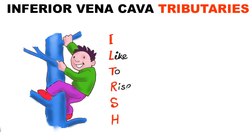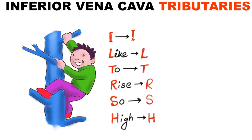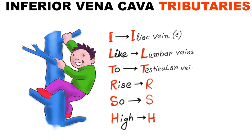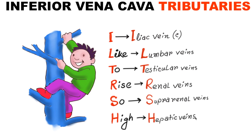Now let's see the mnemonic — it's very simple: 'I like to rise so high.' Now follow the red letters. I stands for iliac vein, L for lumbar vein, T for testicular vein, R for renal vein, S for suprarenal vein, and H for hepatic vein.